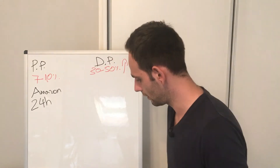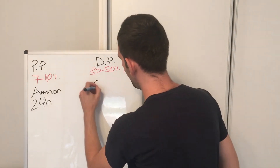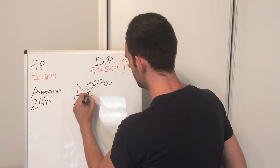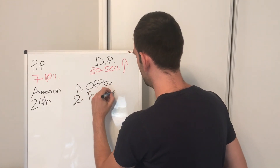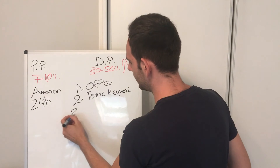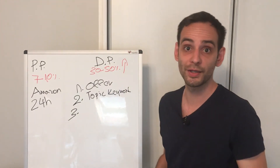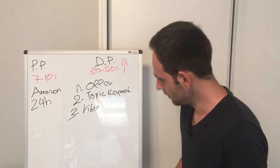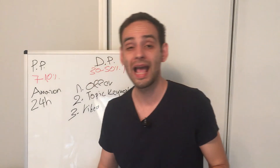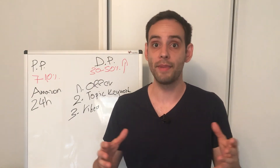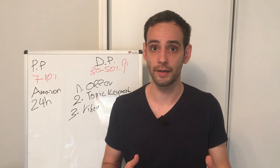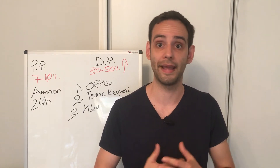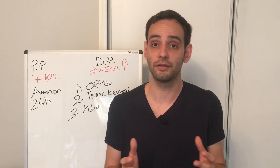So to recap: step one is your offer, step two is your topic or keyword, and step three is to actually shoot the video. The best way is a face-to-face video — that's the best possible approach, even though I know many people are scared of it.